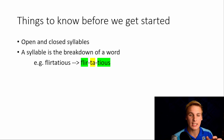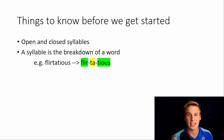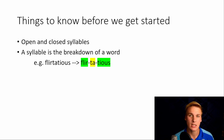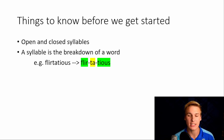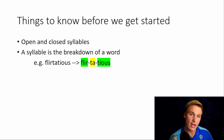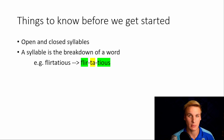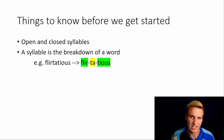So you can hear the different parts: flir, te, and schis. Flir ends with a consonant — R is a consonant — and all syllables that end with a consonant is a closed syllable. All syllables that end with a vowel is an open syllable. This is very important to remember — it's really the only thing you need to know.